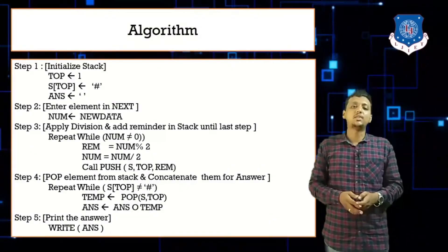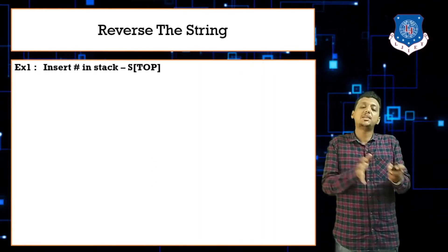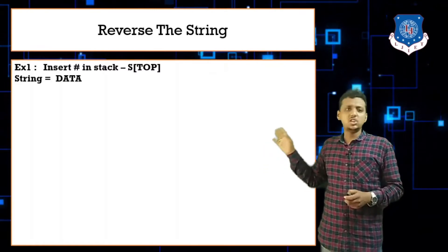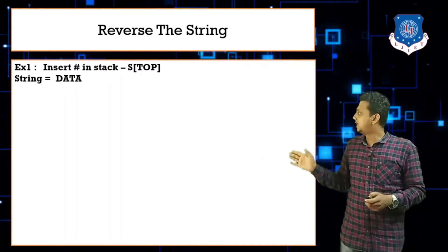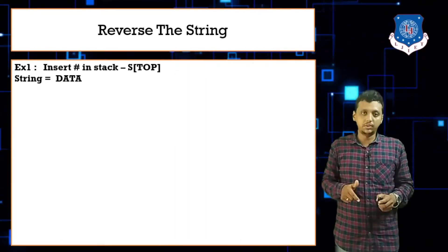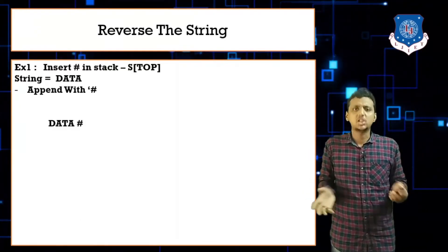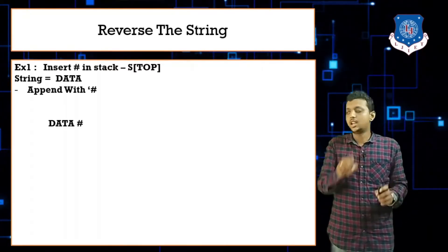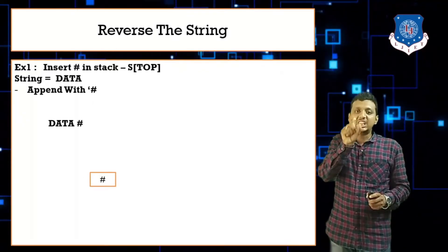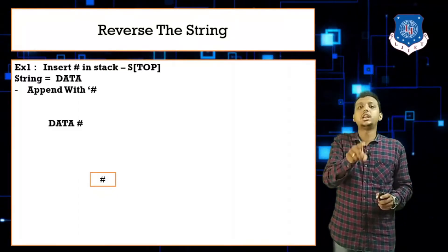Reversing a string is quite similar to decimal to binary conversion. Initialize the stack with hash. Let our string be 'data'. Append hash at the end of the string, making it 'data#' — hash represents the end of the string. Now initialize the stack with hash, then push each character from the string into the stack until you encounter hash.